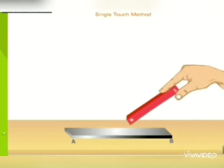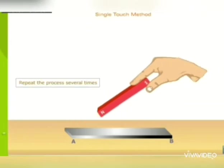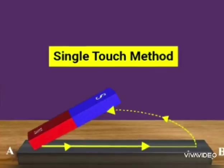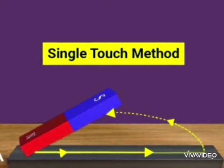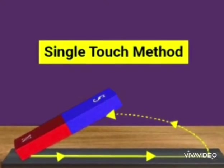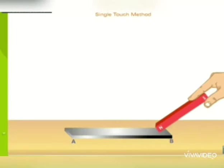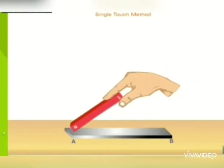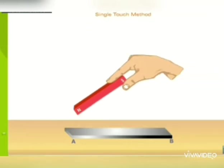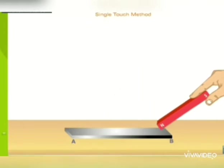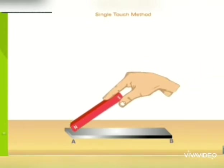After reaching end B, lift the bar magnet and bring its same end, that is same pole, again at the starting end A of iron bar. Move the bar magnet again along the whole length of iron bar in the same direction, that is from A to B. End B tak pehunchne ke baad...